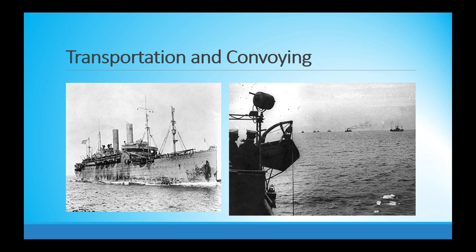The major tasks of the U.S. Navy during the First World War included transportation and convoy: providing ships to transport cargo, supplies, troops, and material, and organizing them into large convoys escorted by destroyers and submarine chasers from the United States to England and back. This was designed to deter German U-boats from attacking, and it was relatively successful.